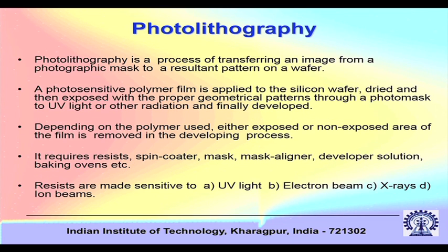We will start with photolithography, which is basically printing by light. It is a process of transferring an image from a photographic mask to a resultant pattern on a wafer. It requires several items: photoresist, spin coater, mask, mask aligner, developer, baking ovens, etc.